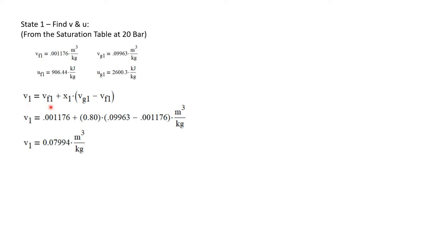Now we can calculate the specific volume of the mixture at state 1. It's just v_f plus the quality times v_g minus v_f, all state 1 properties. We can insert the values that we have from our table. And we'll calculate that the specific volume at state 1 is 0.07994 cubic meters per kilogram.